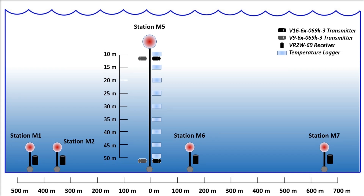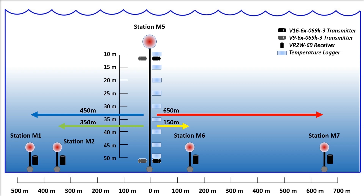Four receivers were deployed at 50 meters depth, below the thermocline, placed at 150 meters, 350 meters, 450 meters, and 650 meters away from the reference fish tags located at station M5. At station M5, reference fish tags were deployed at 11 meters and 50 meters depth. At each depth, two different power levels of acoustic transmitter were used: the lower power V9 transmitter and the higher power V16 transmitter. The tags were programmed to transmit on average every 30 minutes. Temperature loggers were deployed every 5 meters at depths from 10 to 15 meters, configured to transmit temperature data hourly.